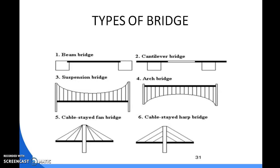A cantilever bridge is built using cantilever structural elements that are supported on only one end and project horizontally into space. They are usually made from a pair of continuous spans extending from opposite sides. Cantilever bridges are constructed similarly to beam bridges.